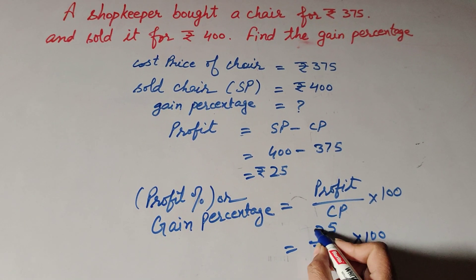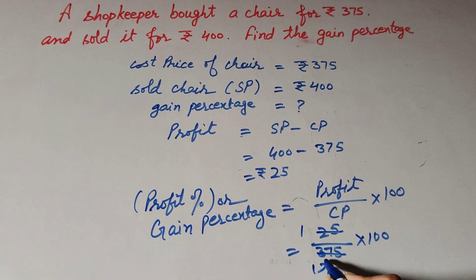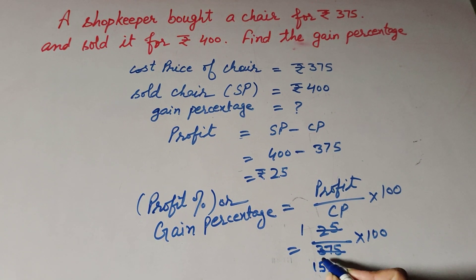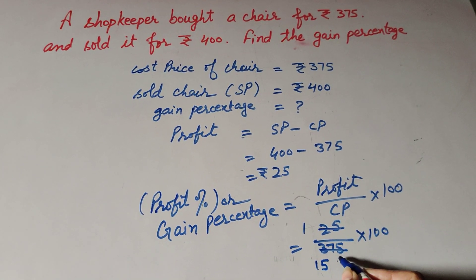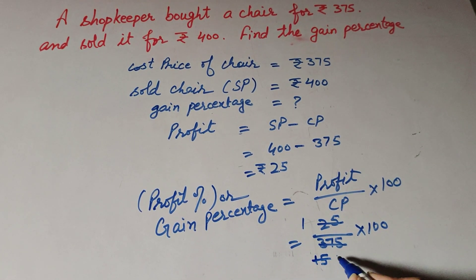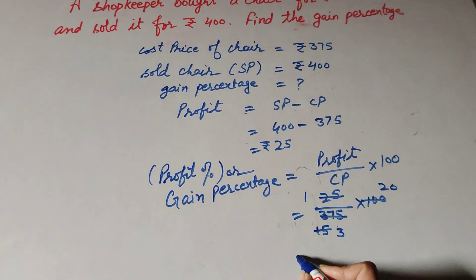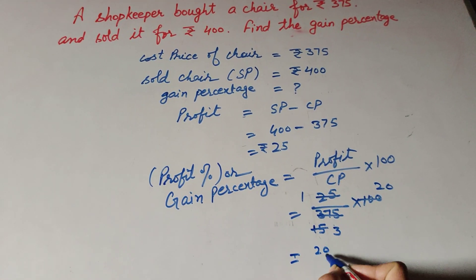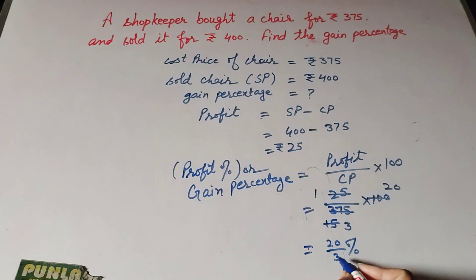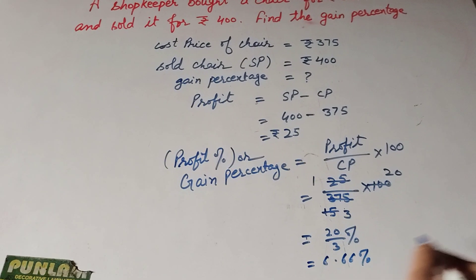We cancel them — 25 ones are 25, and 15 twenty-fives are 375. 15 and 100 are both divisible by 5, so we cancel them: 5 threes are 15 and 25's are 100. So gain percentage equals 20 over 3 percent. 20 divided by 3 gives us 6.66 percent.